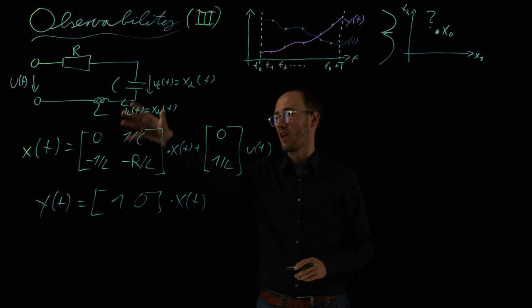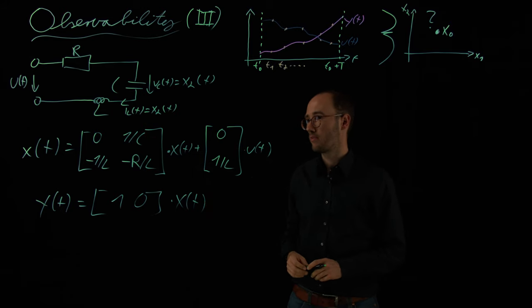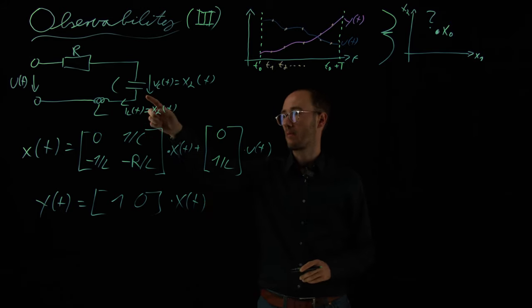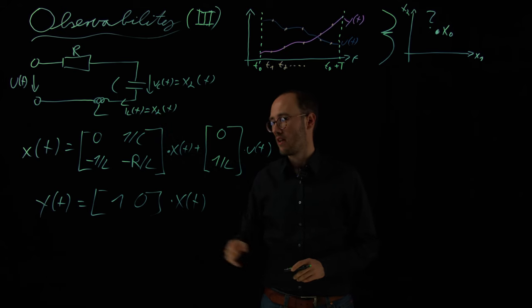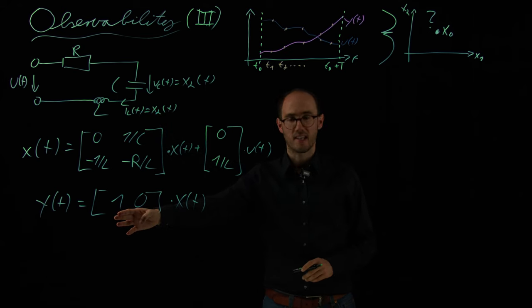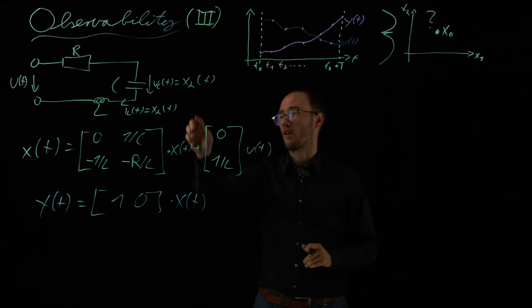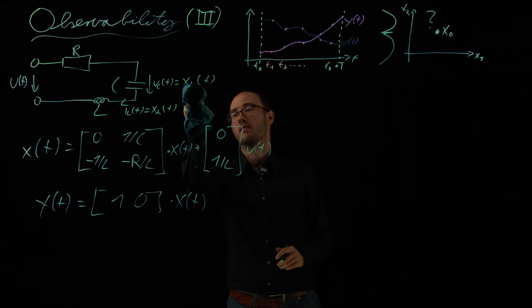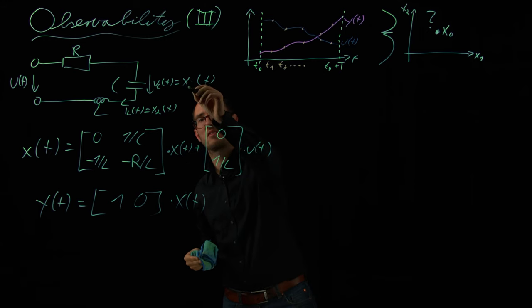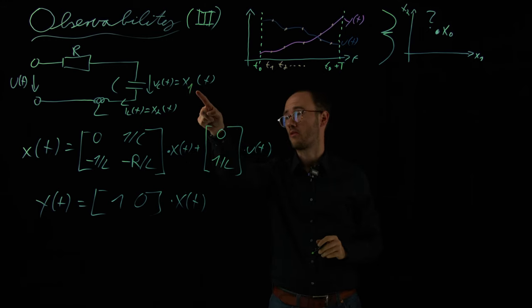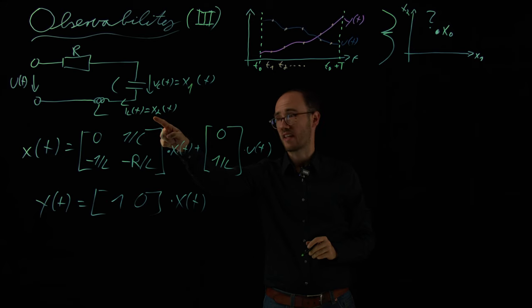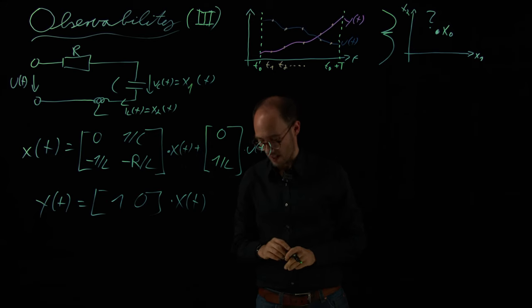So for that, I've rewritten here this example where we have two states, the capacitor voltage and the inductor current, and we have assumed that we have direct access to the capacitor voltage, which we can measure. So here's actually a typo. This should be x1, of course. So we measure x1 directly, and we do not have direct access to x2, which is the inductor current.